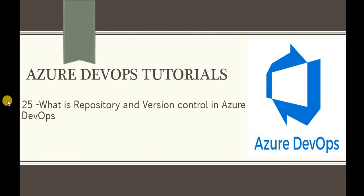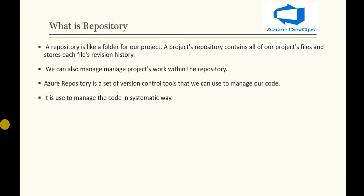We are going to create a repository, understand version control, and see how Azure Boards is useful with the repository and version control. So let's understand what a repository is. A repository is just like a container of the project code — like a folder for our project. A project repository contains all of our project files and stores each file's revision history.